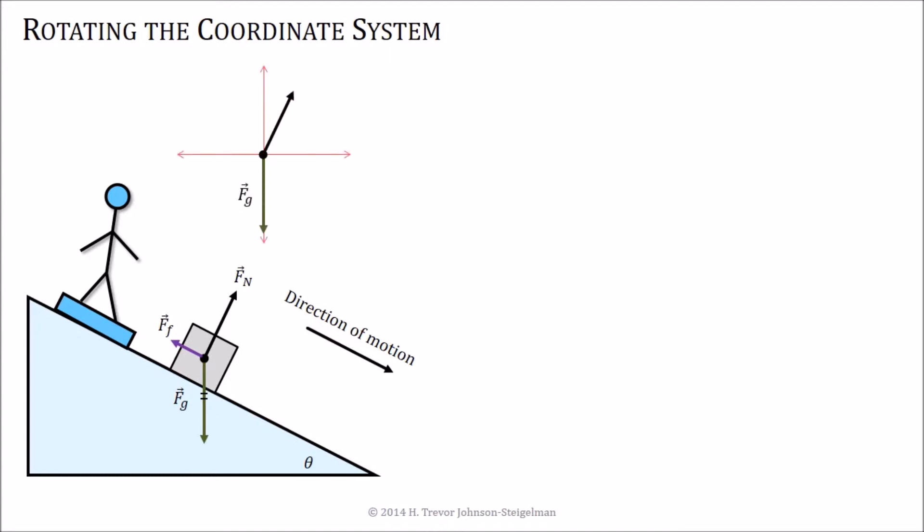So, if you draw your free body diagram, of course, it's got the gravitational force, the normal force, and the frictional force, but it's better to actually rotate those axes, draw these forces in, and because Fg is no longer along one of the coordinate system axes, then we break it into components so that the components actually are.